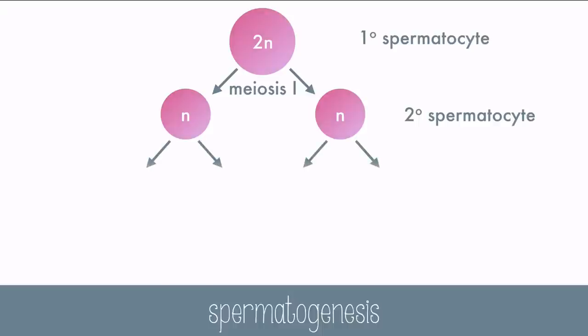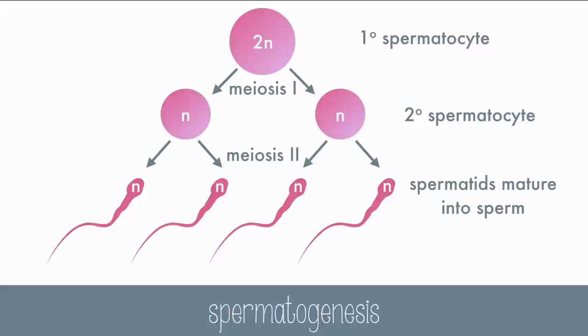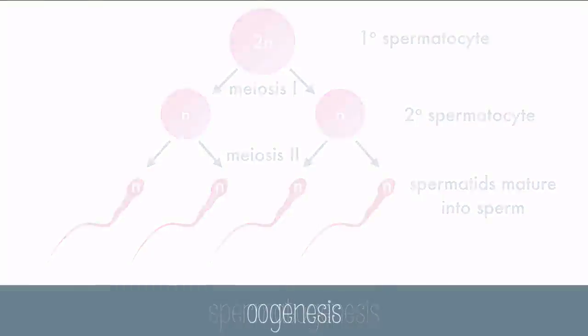After meiosis II, all the cells are haploid, which in humans means they'll have 23 chromosomes. The haploid spermatids will mature into sperm, which will then be motile and ready to fertilize an egg.